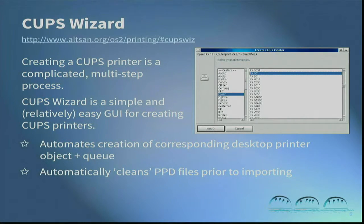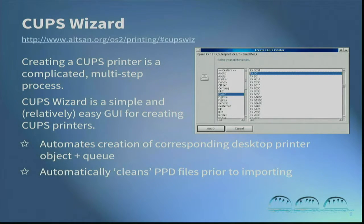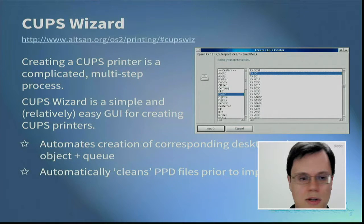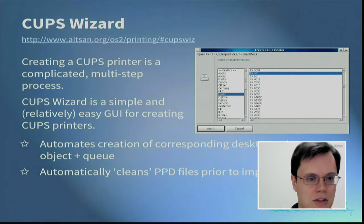Getting printing going with CUPS requires creating a working printer object, and that is a complicated multi-step procedure where it's easy to get things wrong. That's one reason I wrote the CUPS Wizard, which is a simple and relatively easy GUI for creating CUPS printers on OS/2. CUPS Wizard is available from my website as well as from Netlabs, and it's included in the Warpin installers.